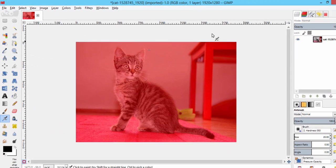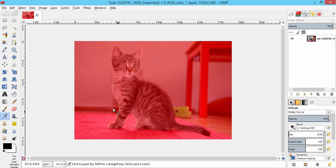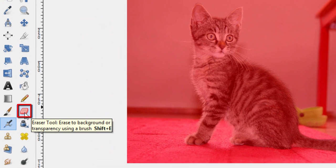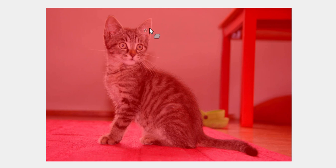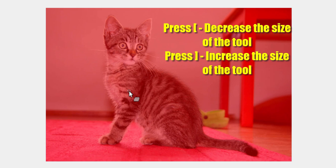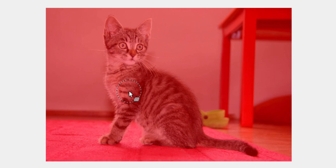Now your image will turn like this. Now select the eraser tool and erase the cat region. Increase the size of the eraser tool by pressing the right bracket key on your keyboard. You can also decrease the size of the eraser tool by pressing the left bracket key. Now I am going to erase this cat.